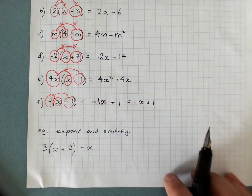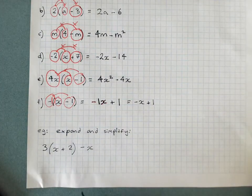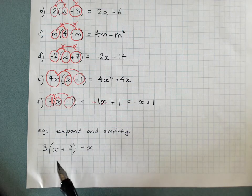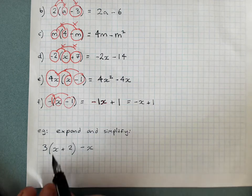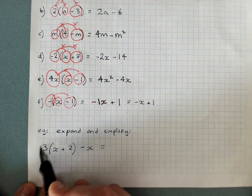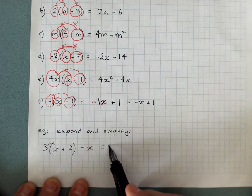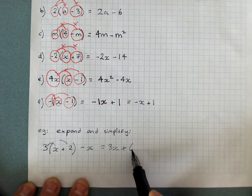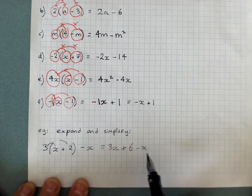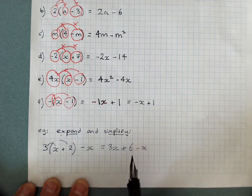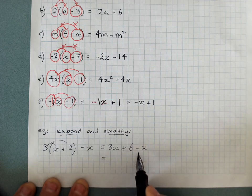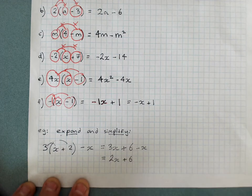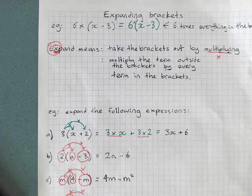A little bit of extension: sometimes they'll ask you to expand and simplify. Just like BODMAS where brackets come first, you expand the brackets first as well. So here, expand first: 3 times x is 3x, 3 times 2 is positive 6. And then there's also this minus x hanging around. You've done the expand, now simplify: 3x take away x is 2x, and the plus 6 just stays there. So that is expanding brackets.